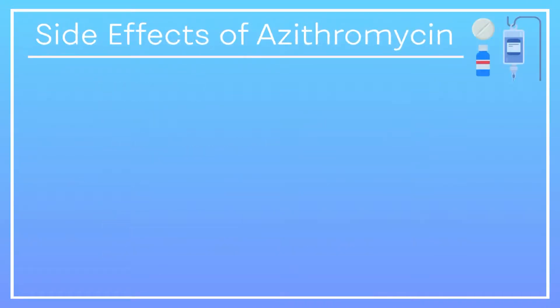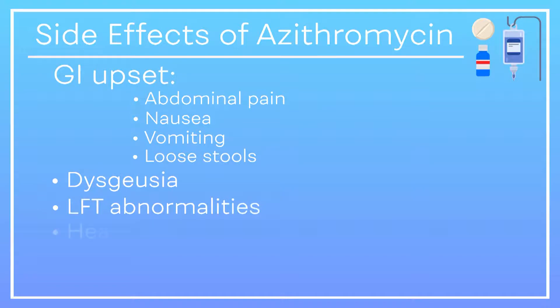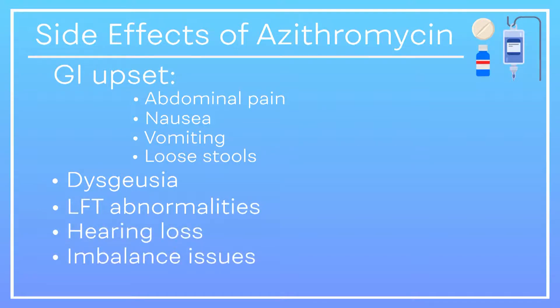Azithromycin can cause GI upset such as abdominal pain, nausea, vomiting, loose stools, dysgeusia, and LFT abnormalities, as well as hearing loss, imbalance issues, and rash.